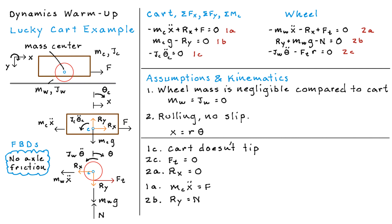And if we go back to the wheel and have a look at equation 2B, we can see that RY is just equal to N because MW is zero. And then going back to the cart, we can substitute RY for N and we just get that N is equal to the weight of the cart.